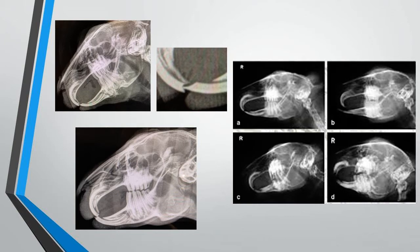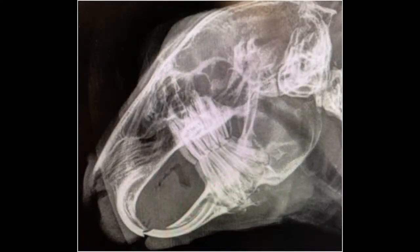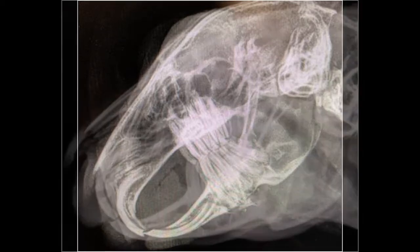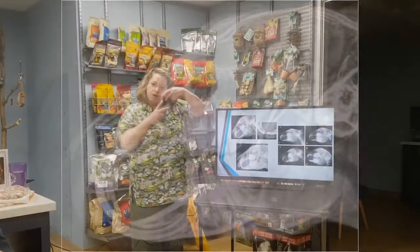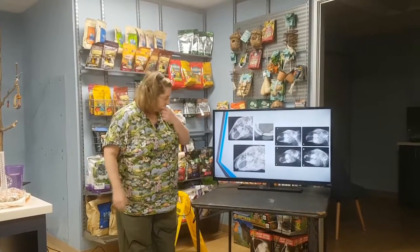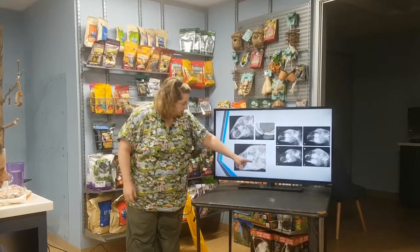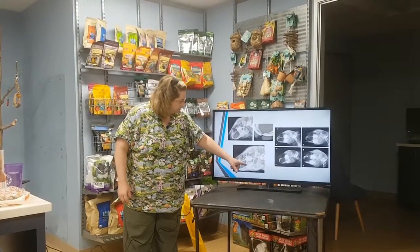Here we have x-rays that are a little abnormal. You can see where that lower incisor is hitting that upper incisor. On this x-ray, the lowers are actually almost in front of the incisors. So you can imagine over time that could become one of those tusk rabbits. The molar is actually looking pretty good on this one.